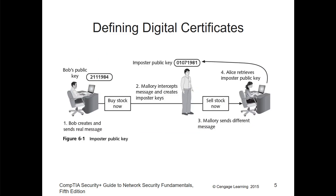Here's an example. Bob's public key — he is sending the statement 'buy the stock now.' Someone intercepts it, creates impostor keys, and forwards it on. When Mallory sends a different message, it will go to the impostor, not Bob.